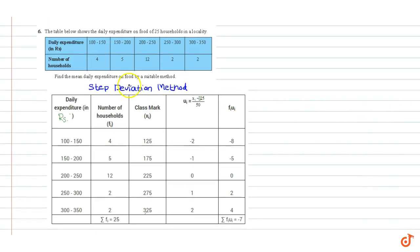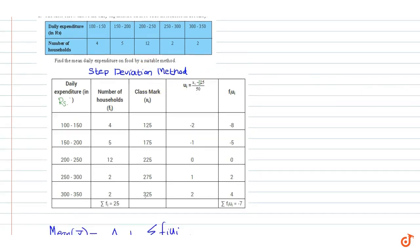That is our mean daily expenditure on food by step deviation method. That is our final answer.